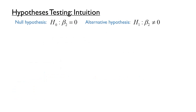Before we tackle the second and third steps, let's turn to some general intuition. After the null and alternative hypotheses are specified, the test answers a simple question: if the null hypothesis were true, how likely is it that we would observe our dataset? If it seems likely that our dataset could have been generated, we fail to reject the null hypothesis. If the data seem unusual — that is, if under the null hypothesis we would have been unlikely to observe data as extreme as our own dataset — we reject the null hypothesis.